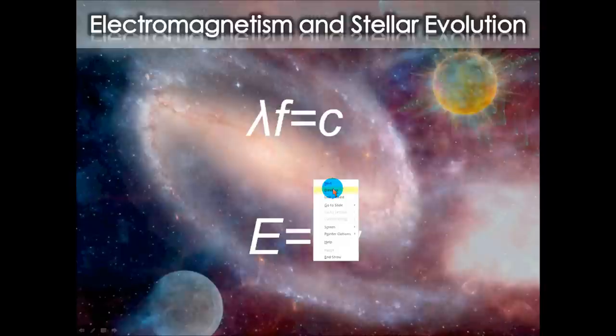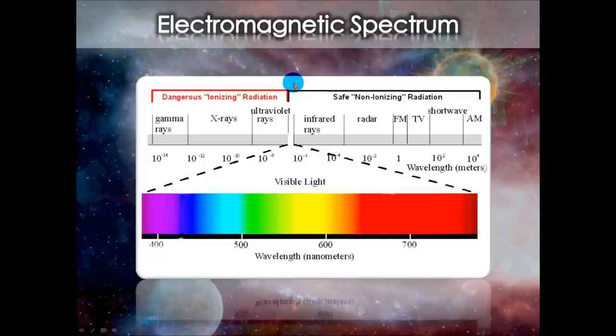Which explains why, if we go back to this graphic here, we see dangerous ionizing radiation and safe non-ionizing radiation. Even though all types of radiation travel at the speed of light, some are less energetic than others, and X-rays and ultraviolet rays are the ones that we most often hear about, that we need to watch out for. Ultraviolet rays being capable of causing burns and skin cancer, and X-rays also being able to cause some tissue damage if you're overexposed to them. Whereas radar and FM have sufficiently low energies that they pass through your body unnoticed without causing any harm.